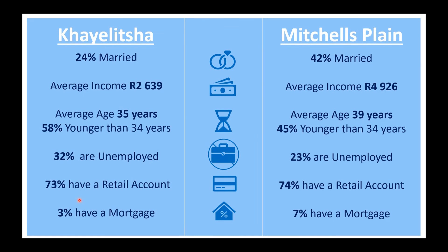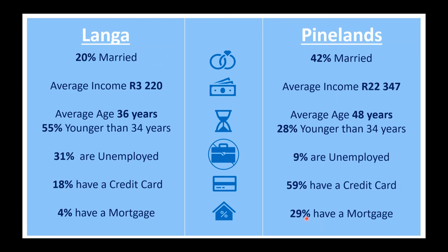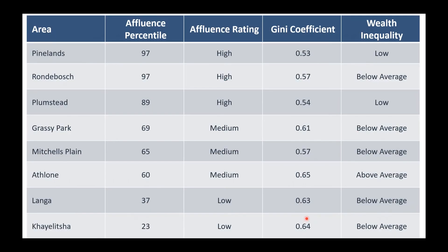But look at Mitchell's Plain and Khayelitsha — two much more relatively similar areas. Mitchell's Plain has a 42% marital rate versus 24% in Khayelitsha; average age 39 versus 35; much lower unemployment; retail accounts the same; and mortgages are double in Mitchell's Plain, probably more to do with the banks than the residents. I find this stuff fascinating.